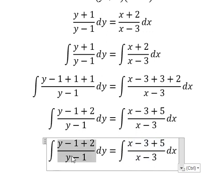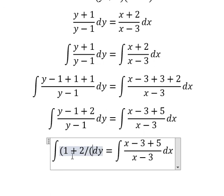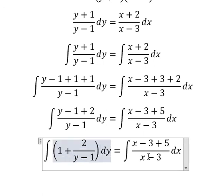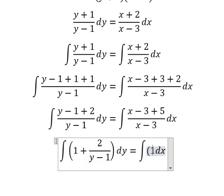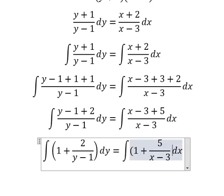So we have 1 plus two over y minus one, and this one, one plus five over x minus number three.